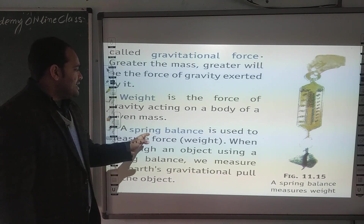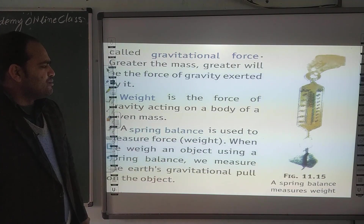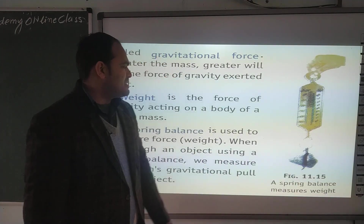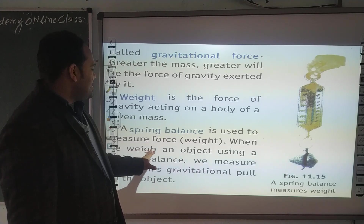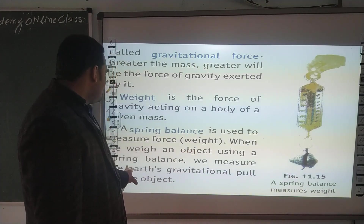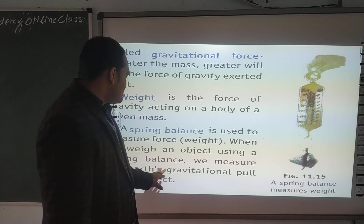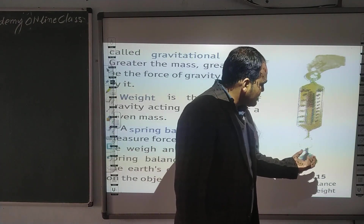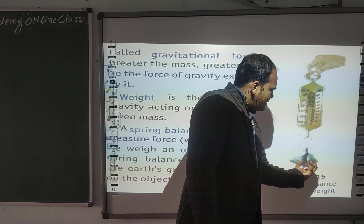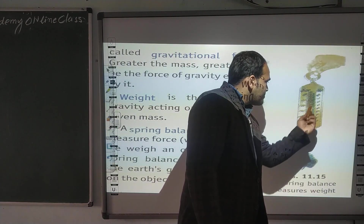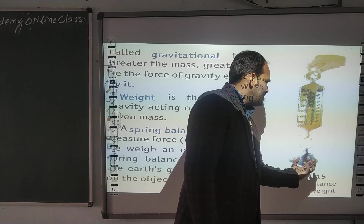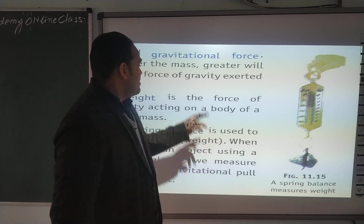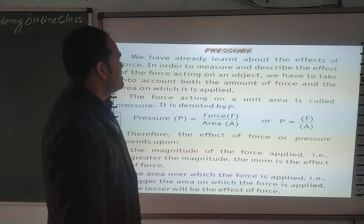A spring balance is used to measure force। When we measure the weight of an object using a spring balance, we measure the earth's gravitational pull on the object। अगर कोई mass है और हमने spring से देखा, तो spring यही measure कर रही है कि gravity कितने force से उसको खींच रही है, और इसी को हम weight कहते हैं।